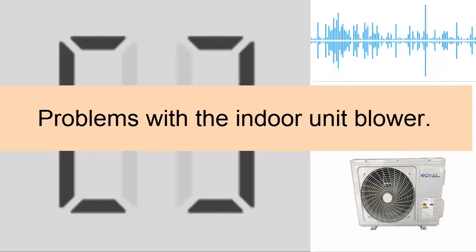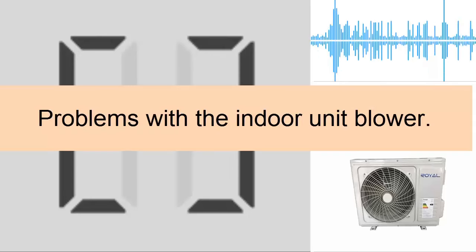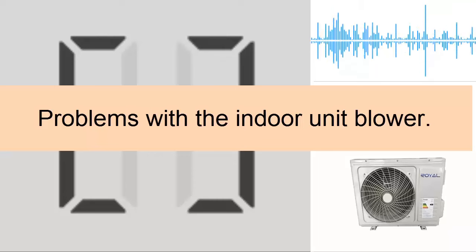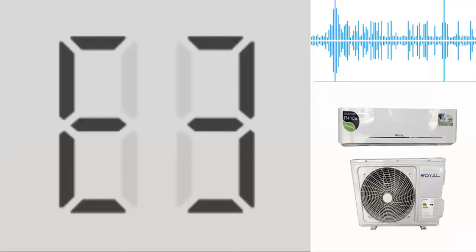In this video, we will explain the meaning of Error E3 in different brands of air conditioners. Let's start by saying that Error E3 can indicate a fault in the fan or blower of the indoor unit, which is located inside the premises. This cause is valid for the following air conditioner brands.